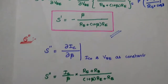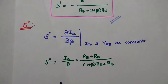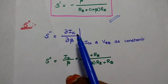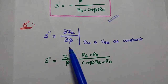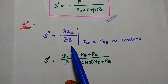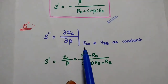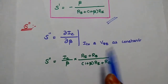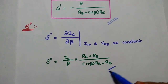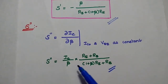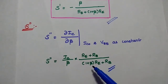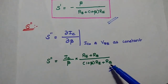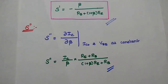Similarly, S double-dash is the rate of change of the output collector current with respect to beta, keeping ICO and VBE constant. Its value is IC/beta · (RE + RB) / (1 + beta·RE + RB).